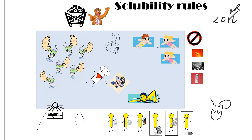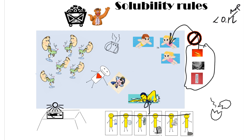What she's done is made a swimming pool. Anything in the pool is soluble. Anything out of the pool is insoluble. These figures in the pool represent the soluble ions, and this was so much easier to learn.